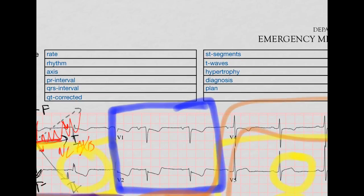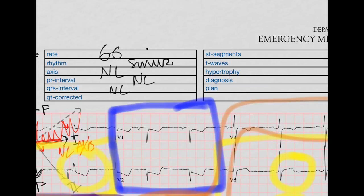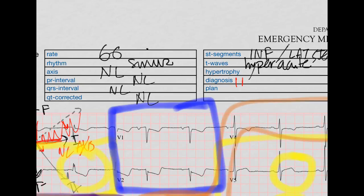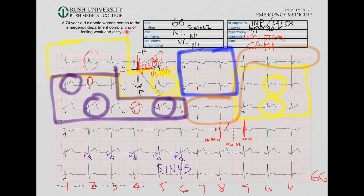So what's going on here? The rate was 66, rhythm was sinus, axis was normal, PR was normal, QRS was normal, QTc was normal. ST segments showed inferior and maybe some lateral ST elevations. T waves were a little bit big — maybe hyperacute. So our diagnosis is, at the very least, an inferior STEMI. The plan for this person is the cath lab. Even though this patient was not even complaining of chest pain — just weak and dizzy — a 74-year-old diabetic woman can have very subtle symptoms. So: inferior STEMI, cath lab.